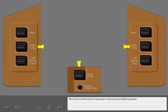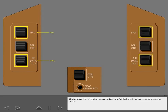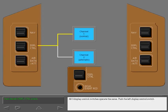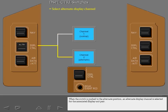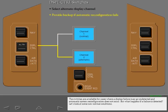All of the switches shown here are in the normal preflight position. Operation of the navigation source and air data attitude switches are covered in another lesson. All three display control switches operate the same. Push the left display control switch. When the switch is pushed to the alternate position, an alternate display channel is selected for the associated display unit pair. The switches are available for cases where a display failure may go undetected and automatic system reconfiguration does not occur. But what happens if a failure is detected? Let's look at some non-normal conditions.